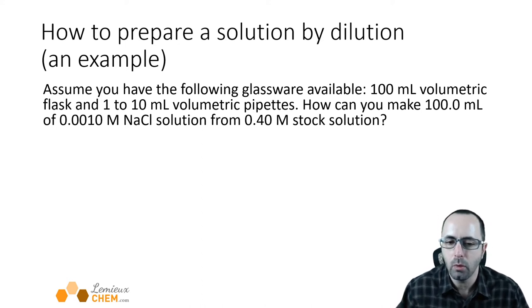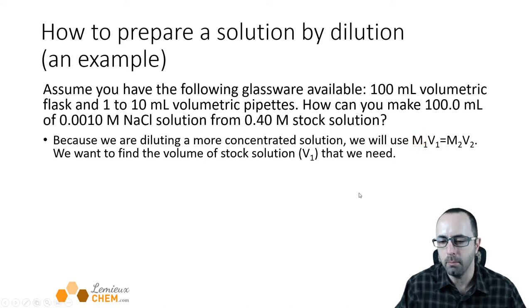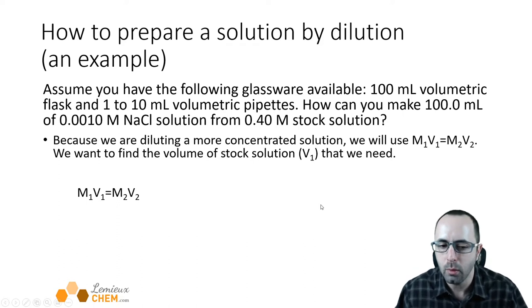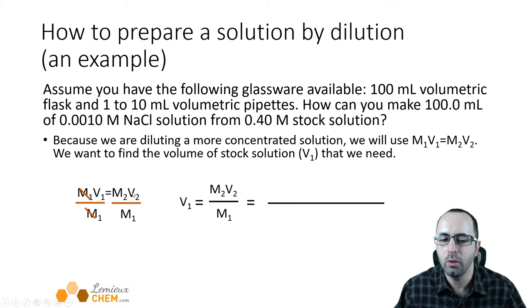We could use M1V1 equals M2V2 to figure out the volume of the stock solution that we'll need. We'll call the volume of the stock solution V1 and its molarity M1. We want to know what volume of the stock solution we'll need to pipette and put into our volumetric flask to make 100 milliliters of this solution. We're solving for V1, so we divide both sides by M1, and we get V1 equals M2V2 over M1.